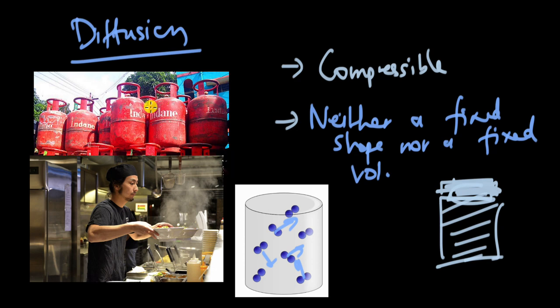So these three were the states of matter, and you can see how the arrangement of particles gives rise to different properties. To quickly summarize: solids have a fixed shape and volume and are not compressible; liquids have a fixed volume but not a fixed shape, and are somewhat compressible; gases are highly compressible and have neither a fixed shape nor a fixed volume.